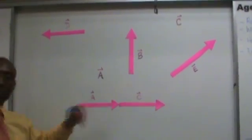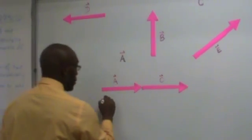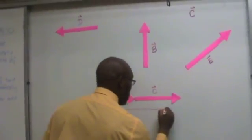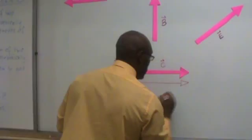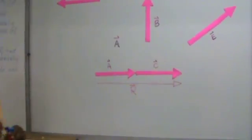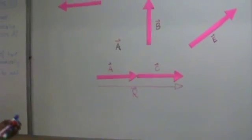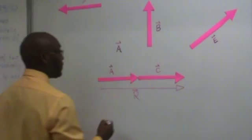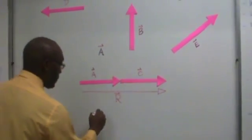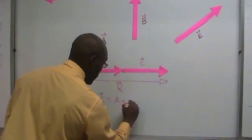So now what is the sum of these two vectors? In order to figure this out, we have to draw what is called the resultant R. Now, if you look at this diagram, you can see that R is simply A plus C.